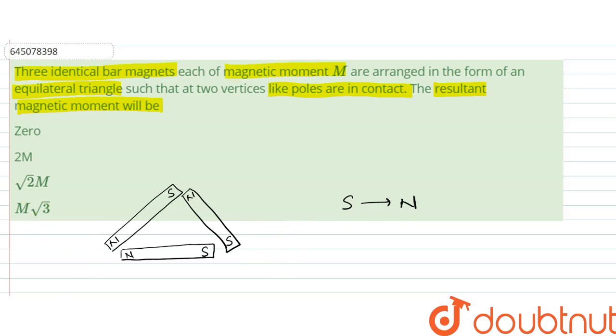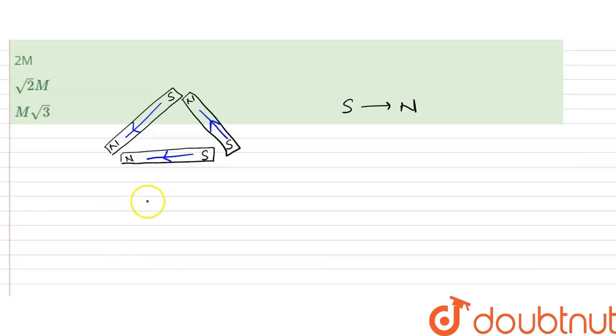What we could say from here is that this is in this direction, this is in this direction, and this is in this direction. So, simple diagram for this is, this is M1, this is M2, and this is M3.